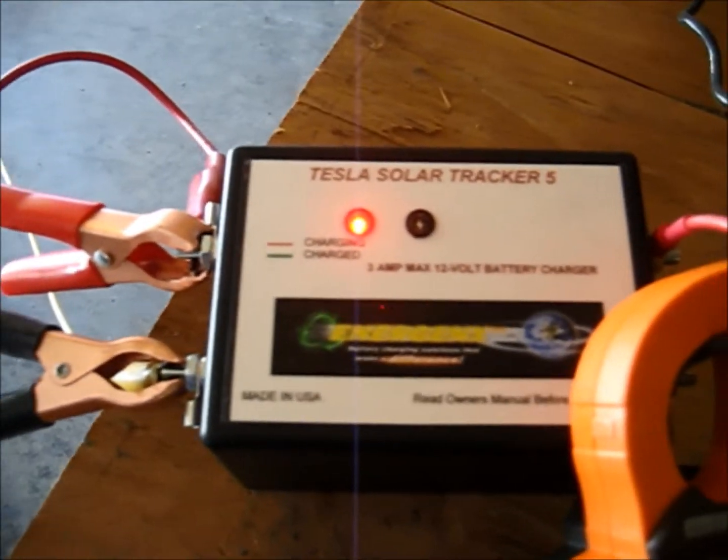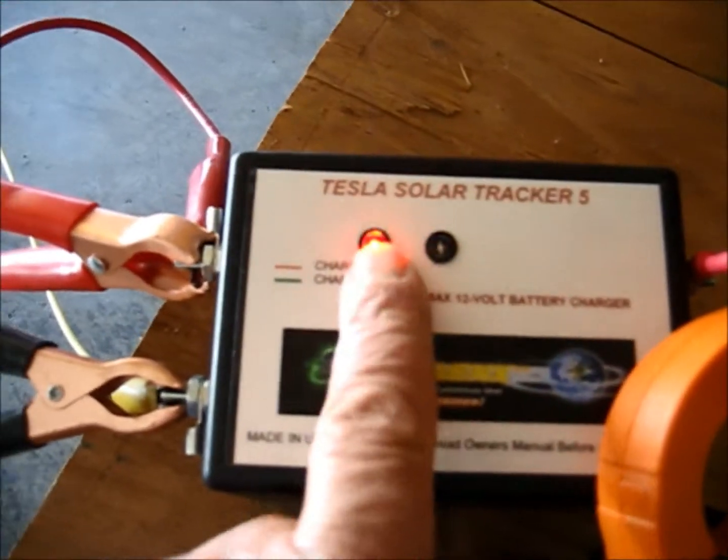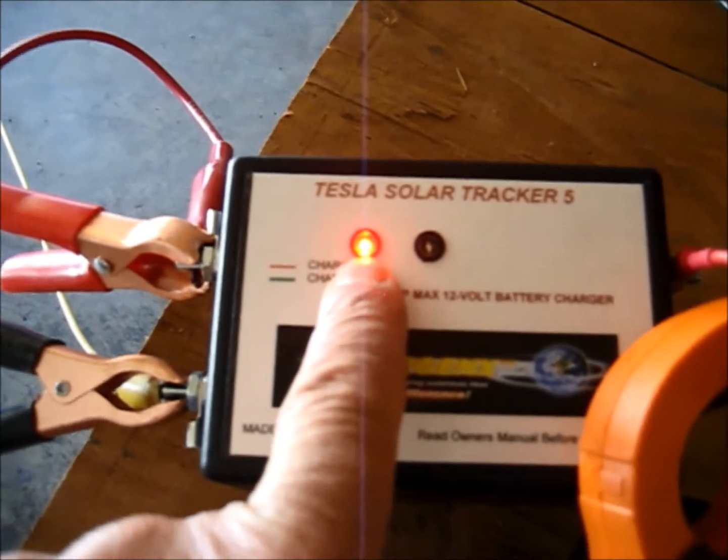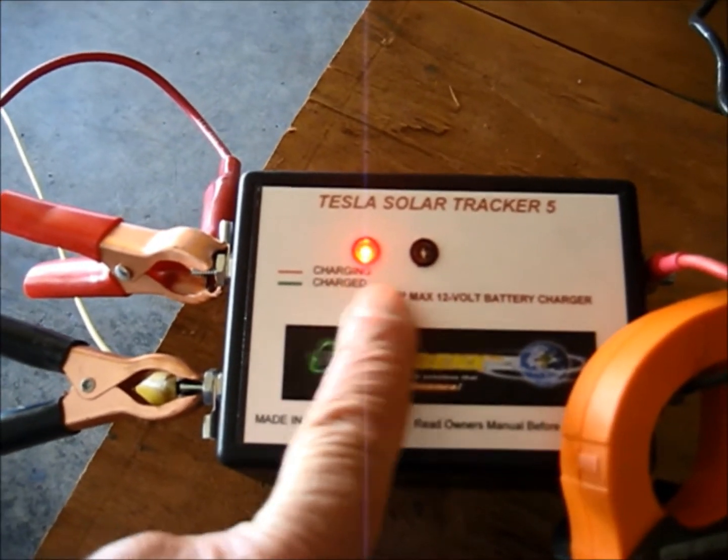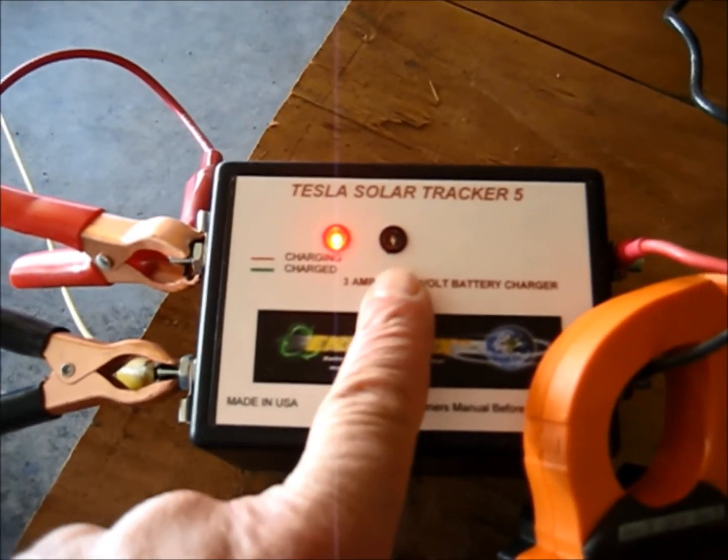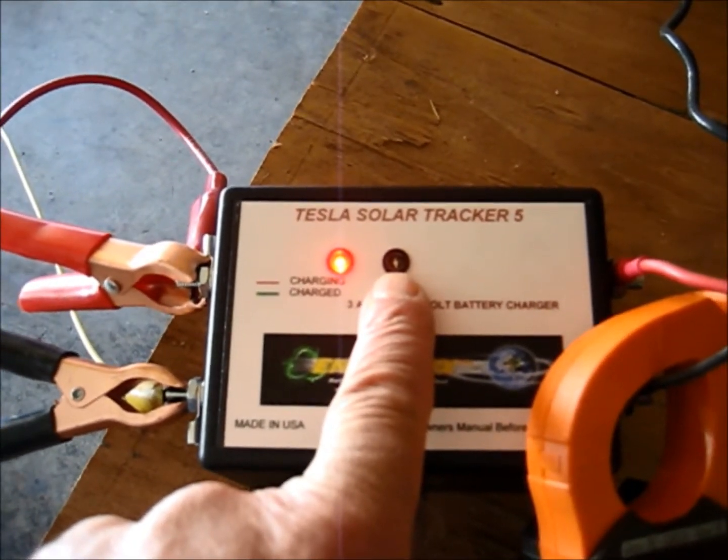And so that just shows you that the battery is receiving the charge. The red indicator indicates that the battery is under charge and when the battery reaches 15.1, this green light will come on and we'll wait for that.